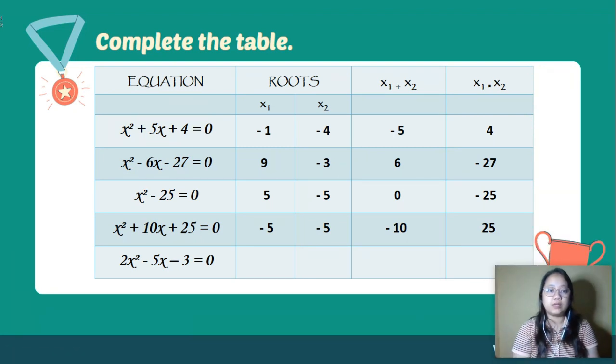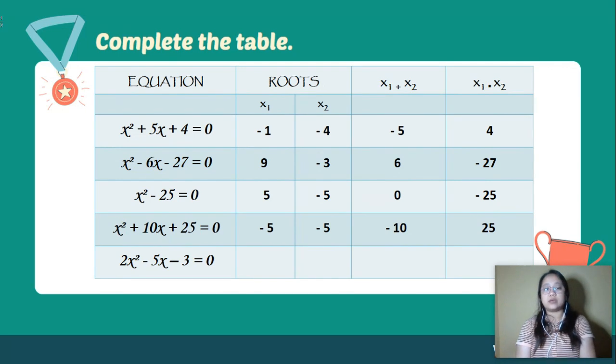Number five: two x squared minus five x minus three is equal to zero.